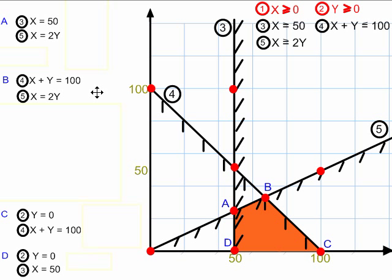The next thing to do is for me to find the x and y coordinates of each of these vertices. Let's just focus our attention on vertex A. Vertex A is where x is equal to 50 and where x is equal to 2y.